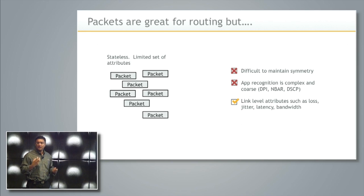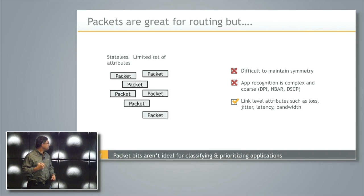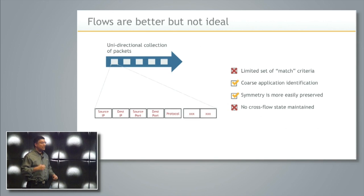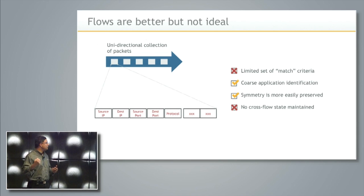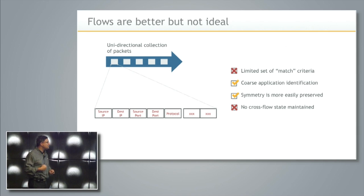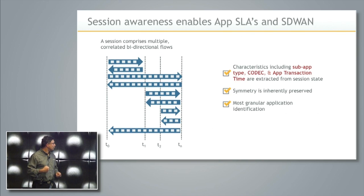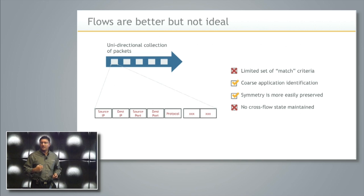You can also get a lot of rich data at the link level — attributes like packet loss, jitter, bandwidth, and so forth. Now when we move to flows: it's a unidirectional stream of packets. You have a much broader set of match criteria and can do better application identification, but there isn't any cross-flow state or symmetry, which makes it really difficult to get to an application transaction level of granularity.